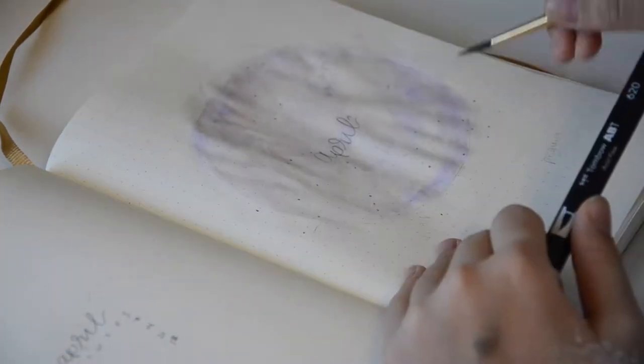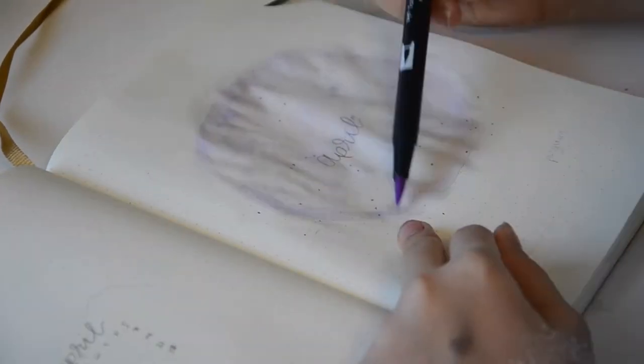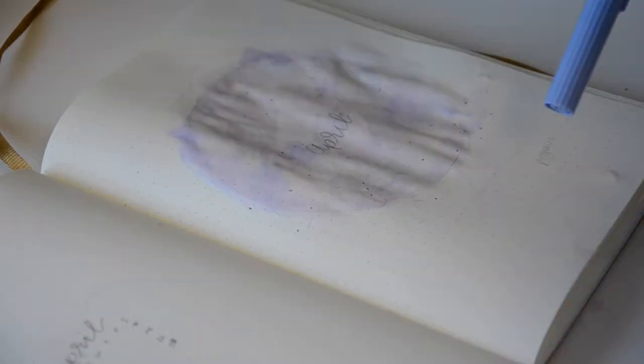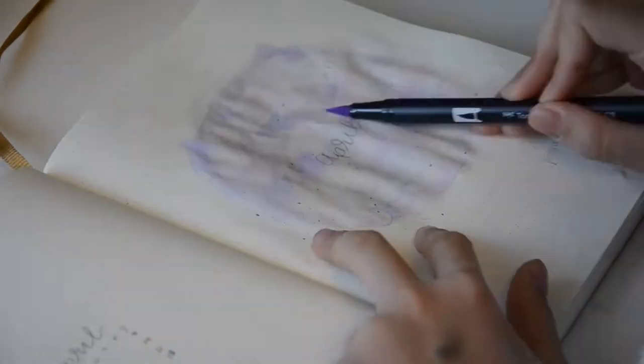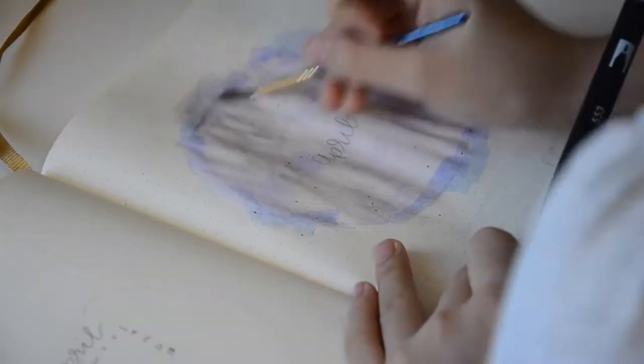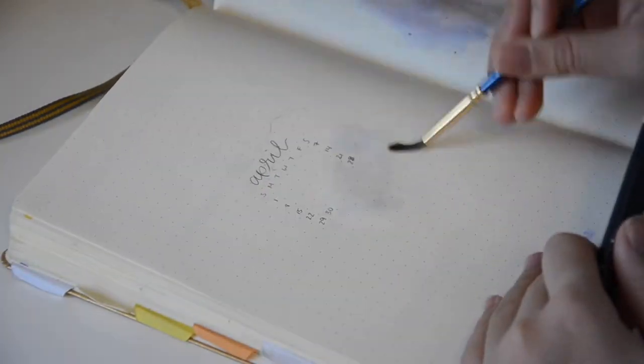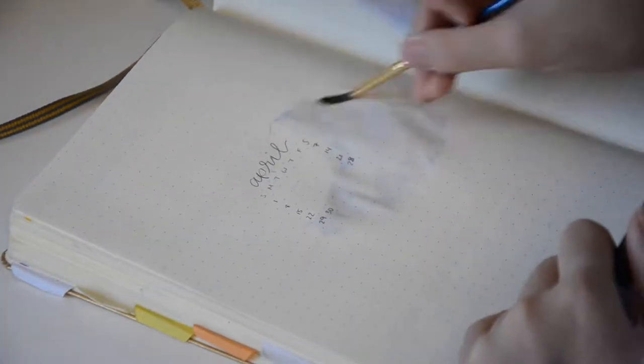I'm using this watercolor effect with my Tombow dual brush pens and some water as I blend it together. I absolutely loved how this cover page turned out, and I'm just going to let it dry so the water can evaporate, and I'm moving on to the page beside it to do my mini calendar.